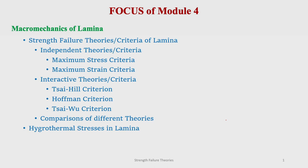Hello and welcome to the second lecture of this fourth module. We have been discussing the strength failure theories of lamina. We have already discussed how the strength failure theories in lamina are an extension of those in isotropic material, since all of you have studied theories of failure in your strength of materials course. The philosophy of failure theories is the same, but in orthotropic lamina the strengths and stiffnesses are direction dependent, and these are taken into account in developing the failure theories.